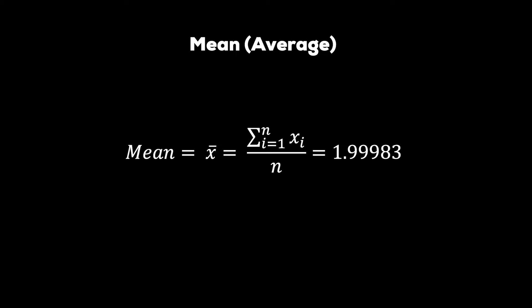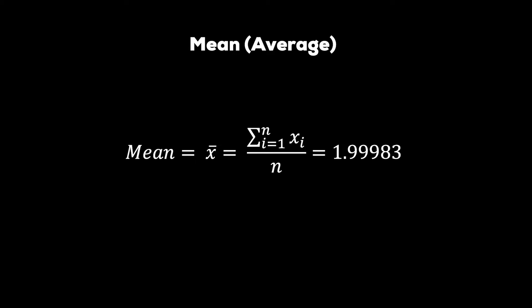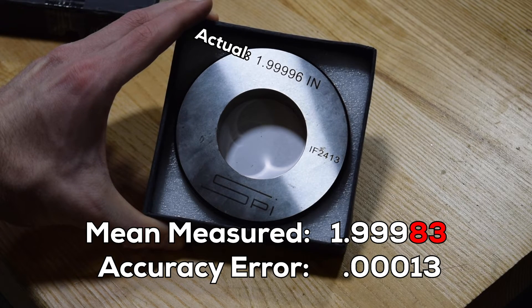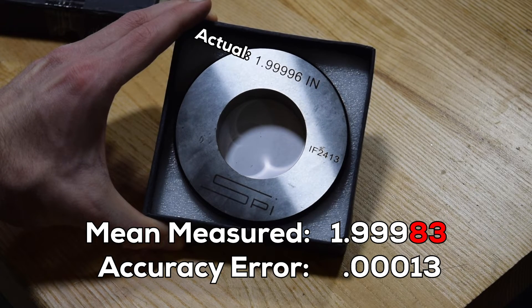To determine the accuracy, we need to know the mean, or average, of the measurements. This is the mathematical notation for that operation, but all we're doing is summing all the measurements, then dividing by the total number of measurements, or in this case, 10. If we compare this value to the actual value marked on the ring gauge, we see that we have an accuracy error of 0.00013.